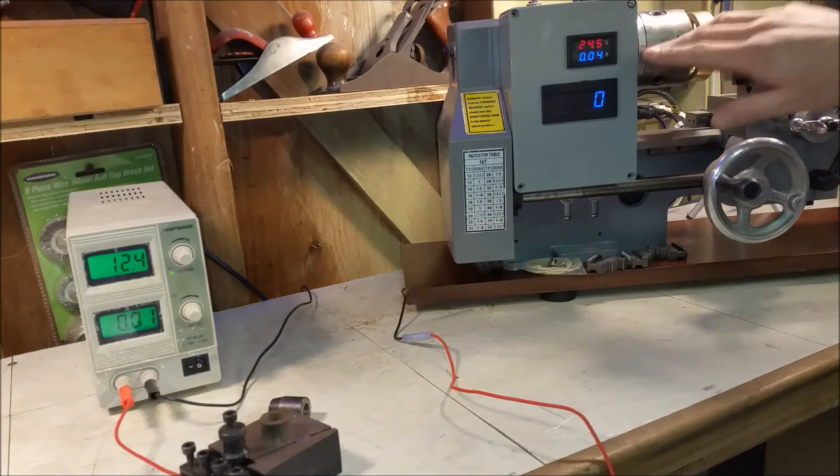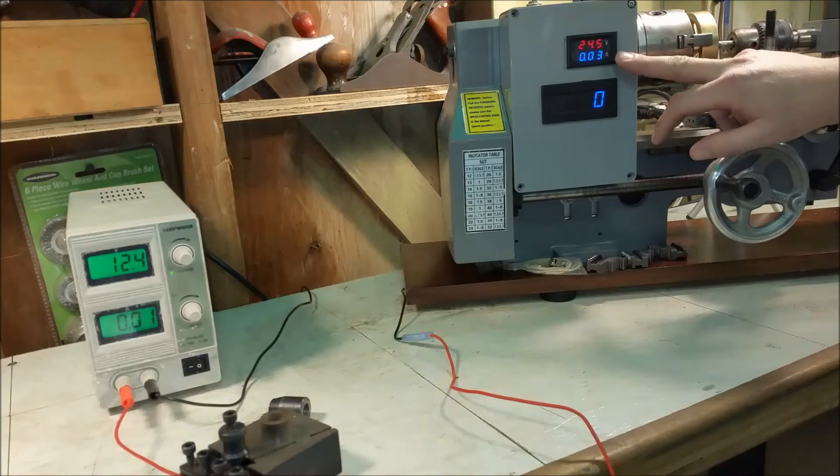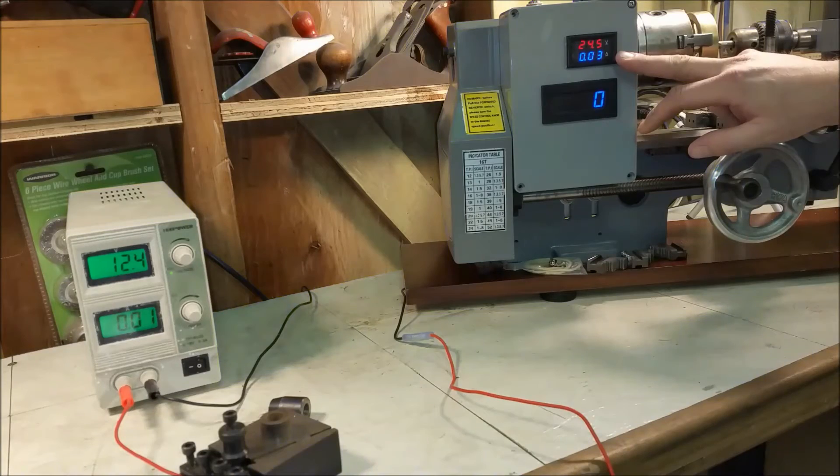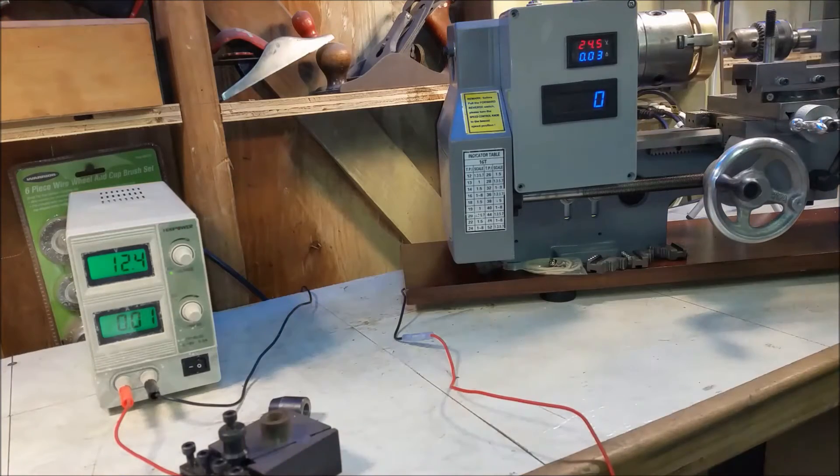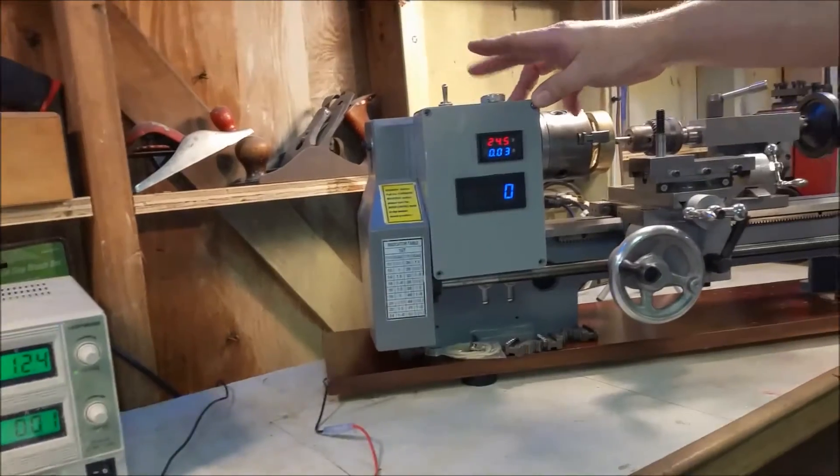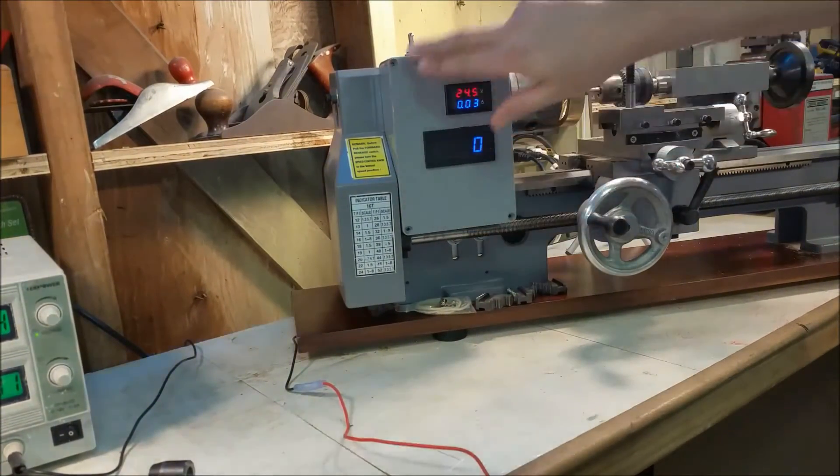You can see the power supply supplying 24.5 volts and 0.03 amps. That's just to run the speed controller. Just to give you a quick demonstration here, we'll spin it up a little bit. I've done this before, but I just want to give you a thorough demonstration. I don't have all the screws in.